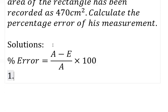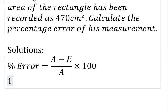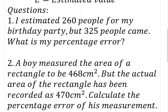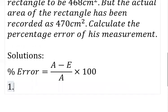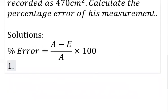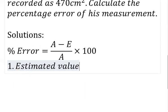For question number one, let's get out our parameters. I estimated 260 people for my birthday party — that means that would be my estimated value — but 325 people came. So my estimated value is 260 people.